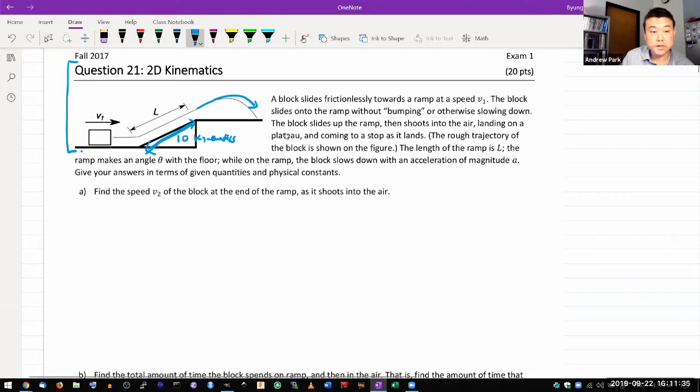The question says a block slides frictionlessly towards a ramp at a speed v1, so that will be the initial speed. The block slides onto the ramp without bumping or otherwise slowing down. At the very bottom it has speed v1. The block slides up the ramp, then shoots into the air, landing on a plateau and coming to a stop as it lands. It highlights the length given and tells you something about the angle theta with the floor. While on the ramp, the block slows down with an acceleration of magnitude A.